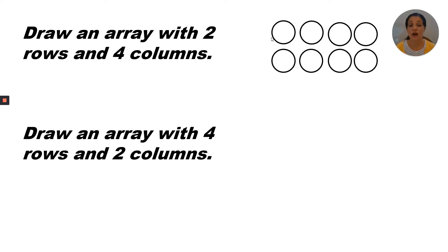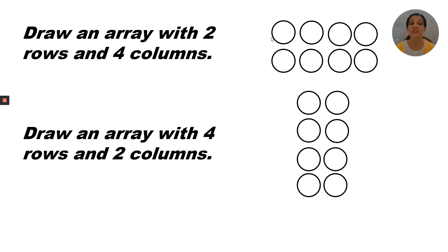Now draw an array with four rows and two columns. It should look like this. I have four rows and two columns. That means I have two in each row.